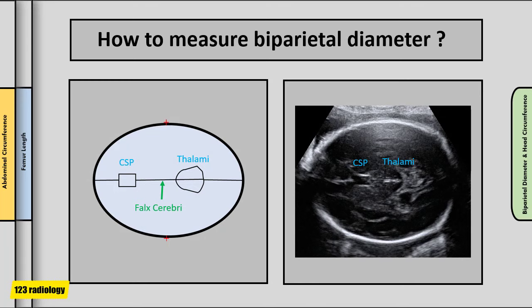To obtain an ideal image for biparietal diameter measurement, get a cross-sectional view of the fetal head at the level of the thalami. The head should be as close to horizontal as possible, appear oval in shape, and show symmetry on both sides. The falx cerebri should be centrally positioned as a continuous midline echo, broken anteriorly at one-third of its length by the cavum septum pellucidum. The thalami should be located symmetrically on each side of the midline. The cross-section should fill at least 30% of the monitor, with calipers placed outer-to-outer at the widest part of the skull.